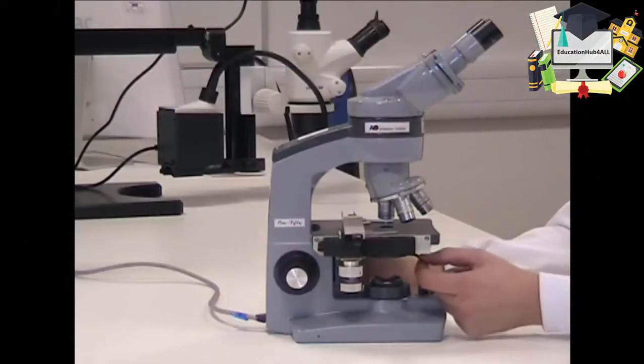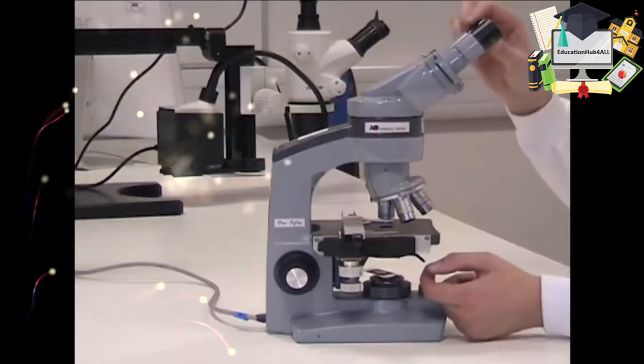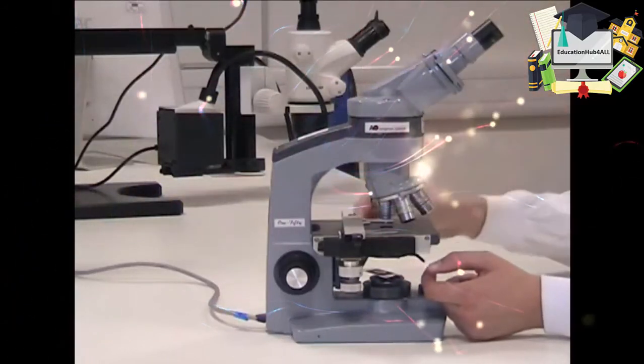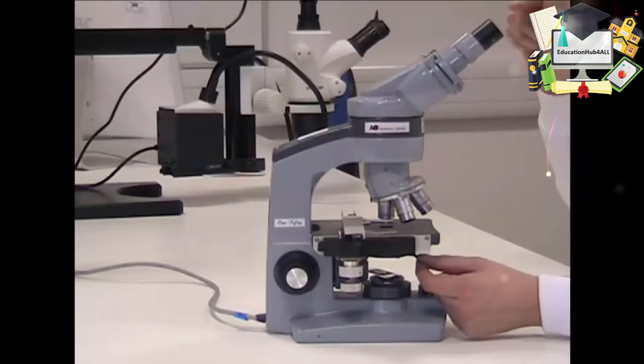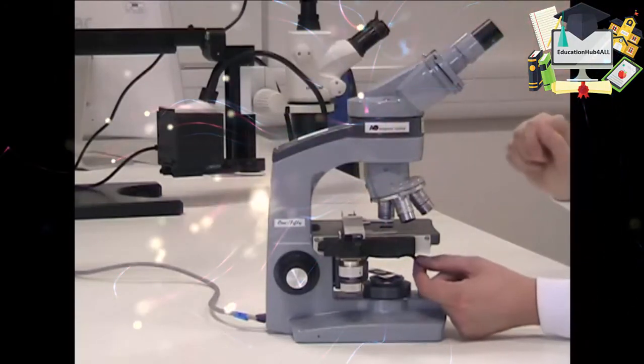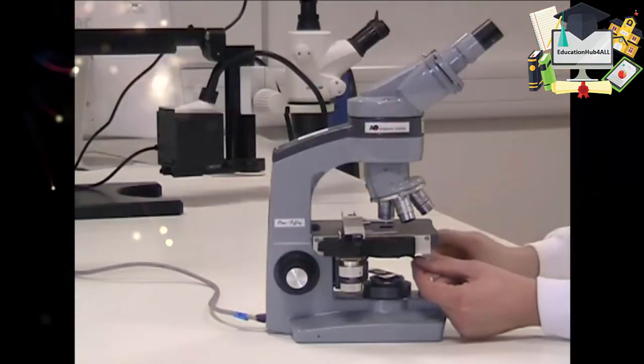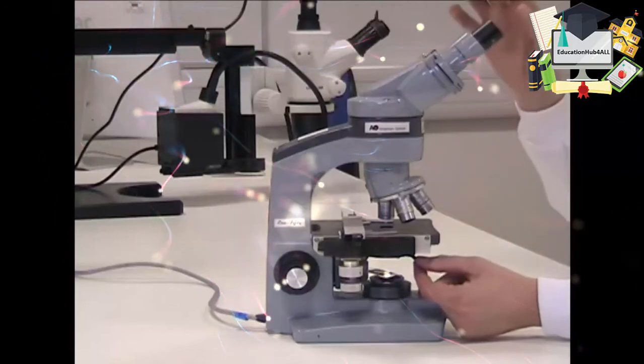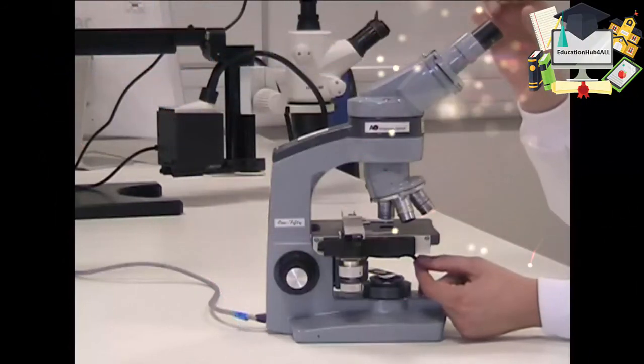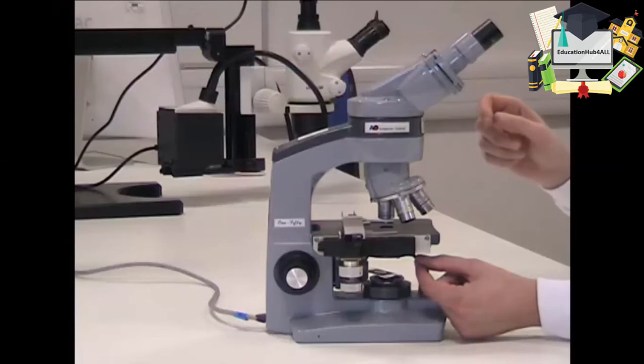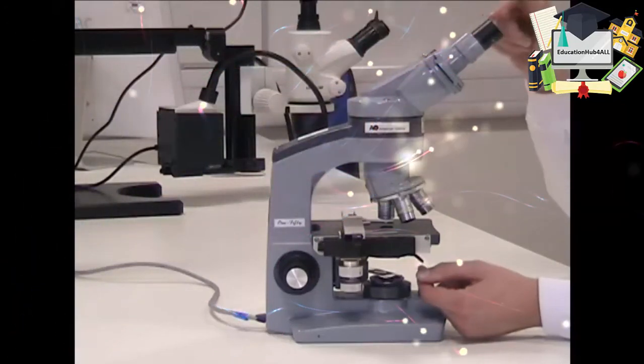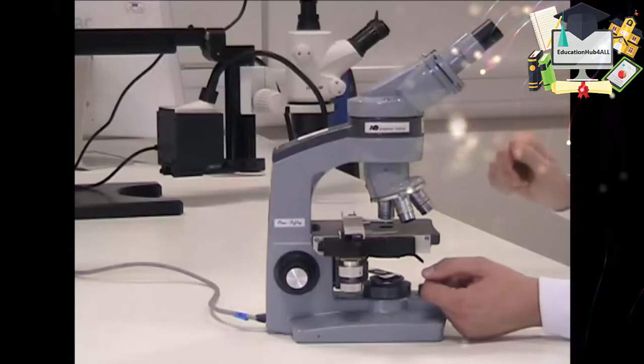Now you need to adjust the iris diaphragm lever. To do this, you must remove one of the eyepieces and look down the tube. You can see a circle of brightness down there. Close the iris diaphragm down as far as it will go and you'll see that circle of brightness turns into a small spot. Then open it back up again until it just stops getting any bigger. You can just see the edges of the diaphragm around the edge of that circle of brightness. Then you can return the eyepiece and look at your slide.